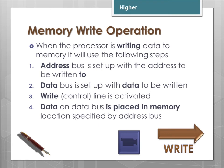When the processor is wanting to write to memory: first, the address bus is set up with the address to be written to — this usually lives in the memory address register. The data bus is set up with the data that is going to be written to memory, usually in the memory data register. The write control line is activated, and the data on the data bus is then placed in the specific memory location.